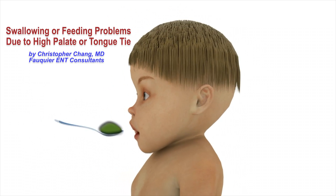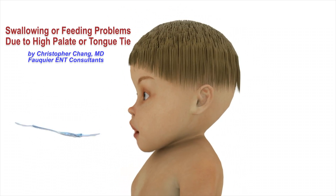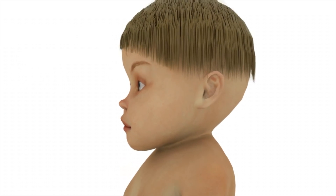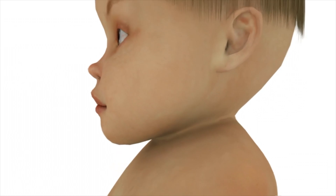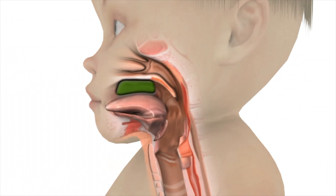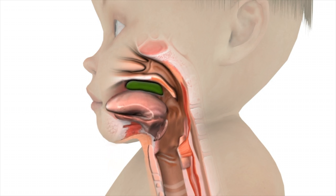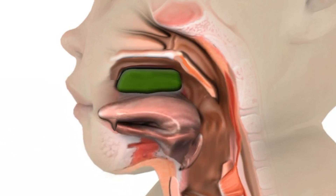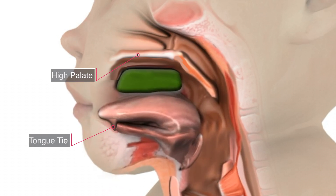With a normal swallow, food and liquids move from the mouth into the esophagus, directed by a precise sequence of coordinated muscle movements. However, the presence of a tongue tie and/or a high palate disrupts this sequence by making it much more challenging for the tongue to initiate an efficient and effective swallow.